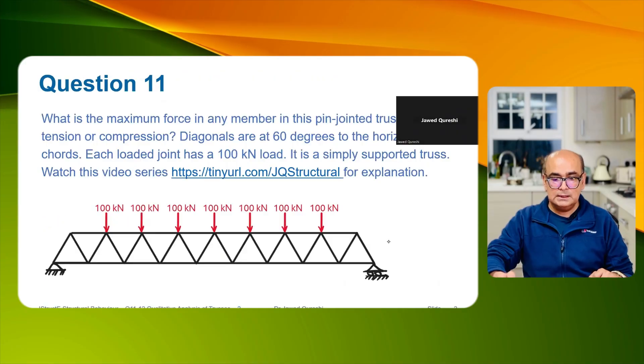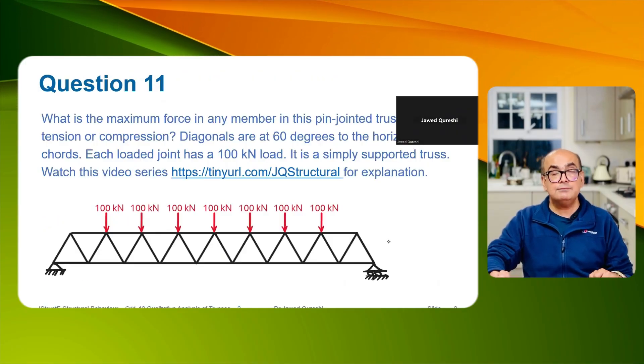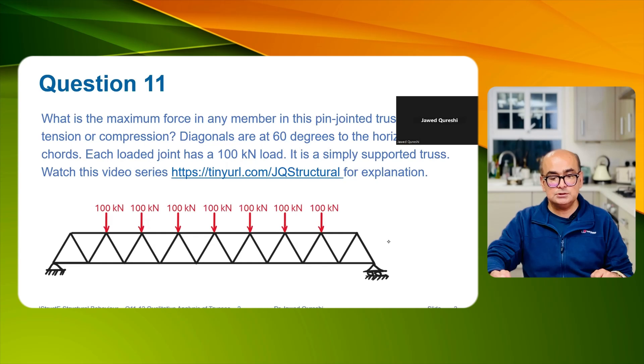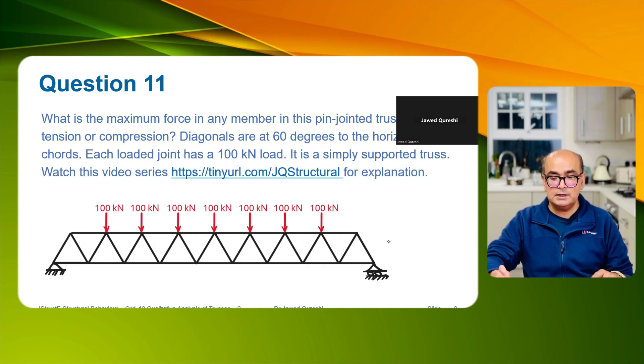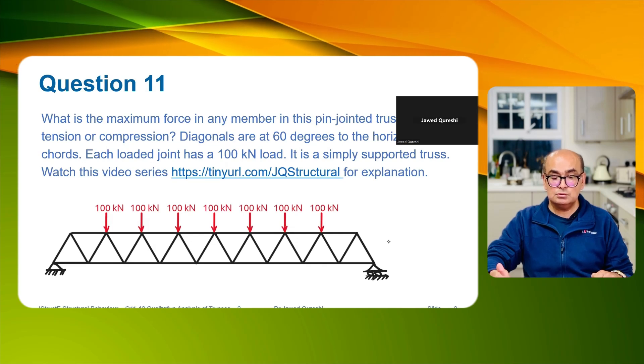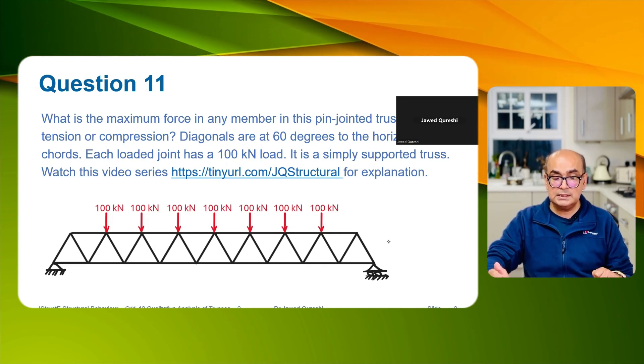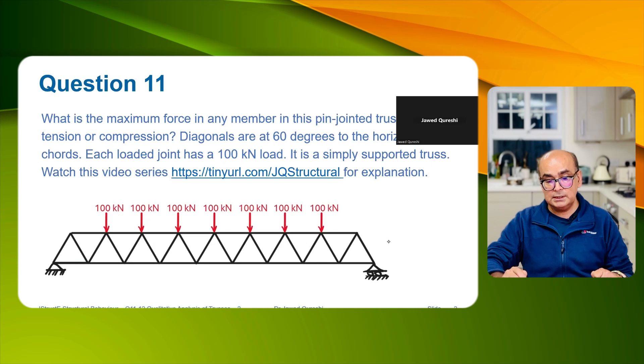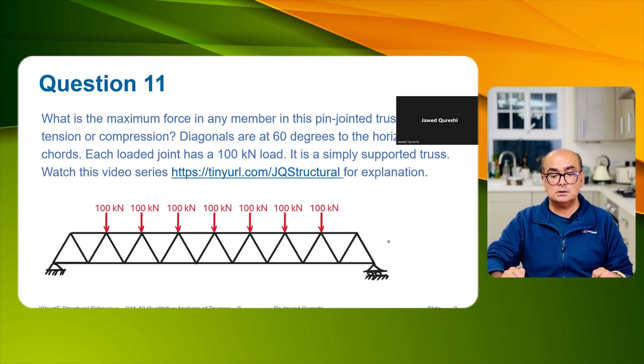You can use these tutorials to prepare for that examination. So let's dive into our first example. In our first example we have to find out the maximum force in the pin jointed truss where diagonals are inclined at 60 degrees to the horizontal chord members and each joint is loaded with 100 kilonewton load.